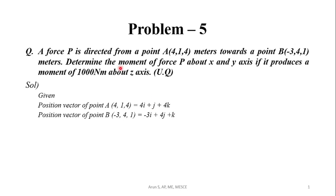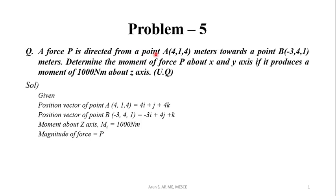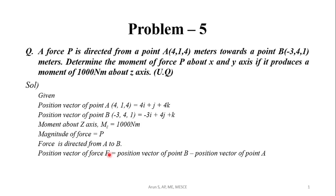The moment about the Z axis is given as 1000 Nm, produced by force P. Since force P is directed from point A to point B, the direction vector R is the position vector of B minus the position vector of A. B is (-3i + 4j + k) and A is (4i + j + 4k), so R = -7i + 3j - 3k.